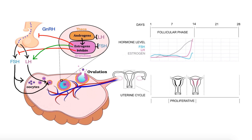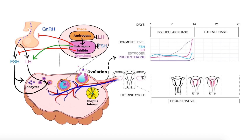This marks the end of the follicular phase and the beginning of the second half of the menstrual cycle, called the luteal phase. After ovulation, the follicle cells that used to hold the egg develop into a structure called the corpus luteum. This structure becomes a center for the production of the final key hormone, that is progesterone. Just like estrogen, progesterone helps the uterine lining to become thicker and more vascular. Progesterone also stimulates glands in the uterine wall to produce fluids necessary for the nutrition of the potential embryo, and stimulates glands in the cervix to secrete thick mucus that closes off the uterine opening and becomes a barrier to sperm and bacteria. For this reason, this phase of the uterine cycle is also called the secretory phase.